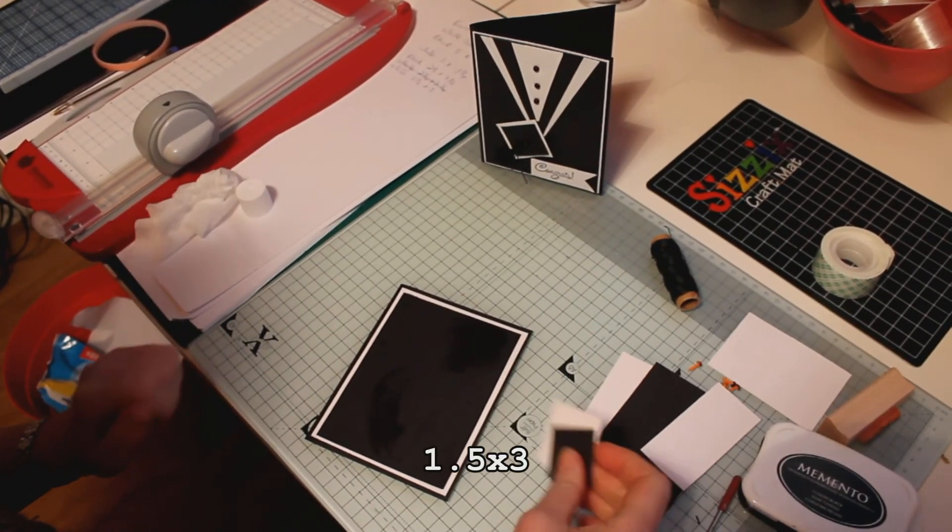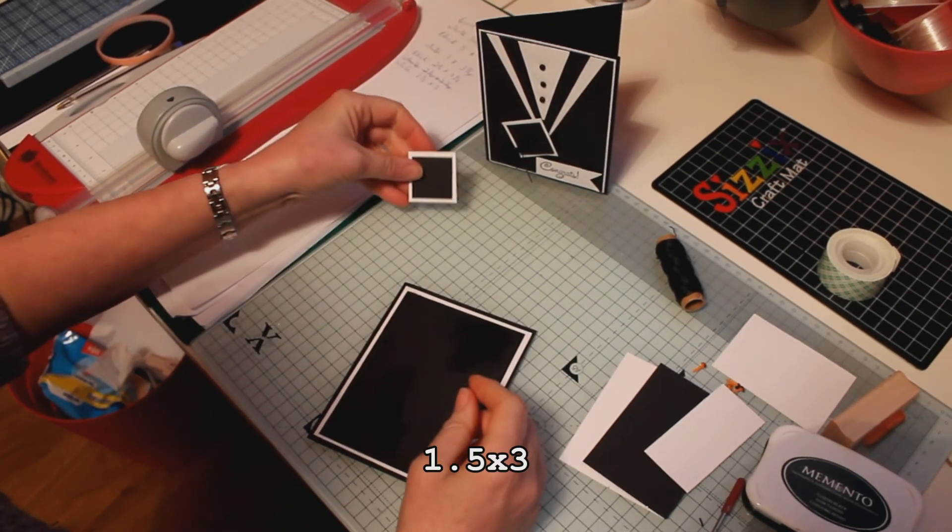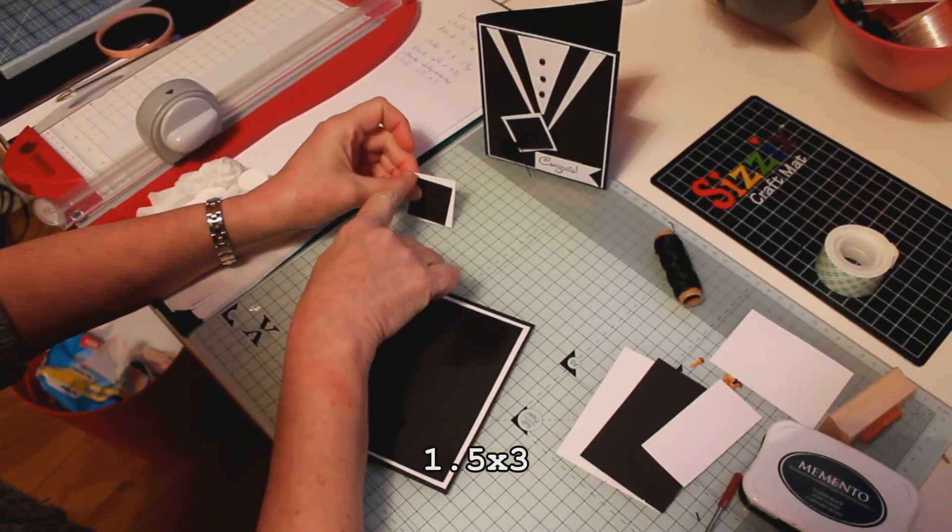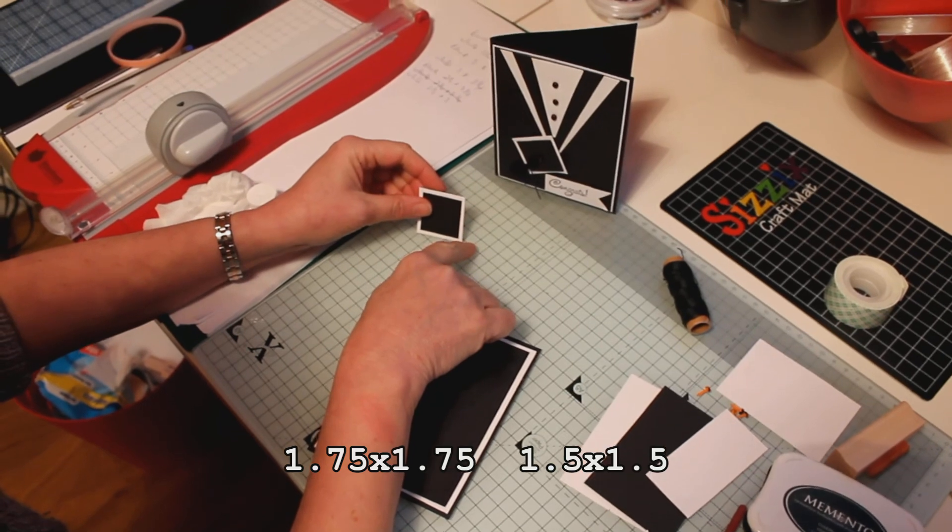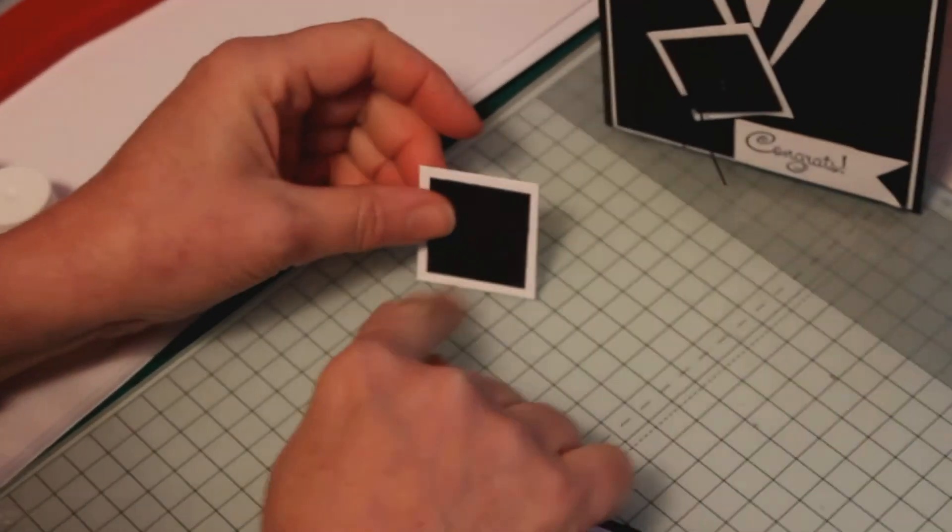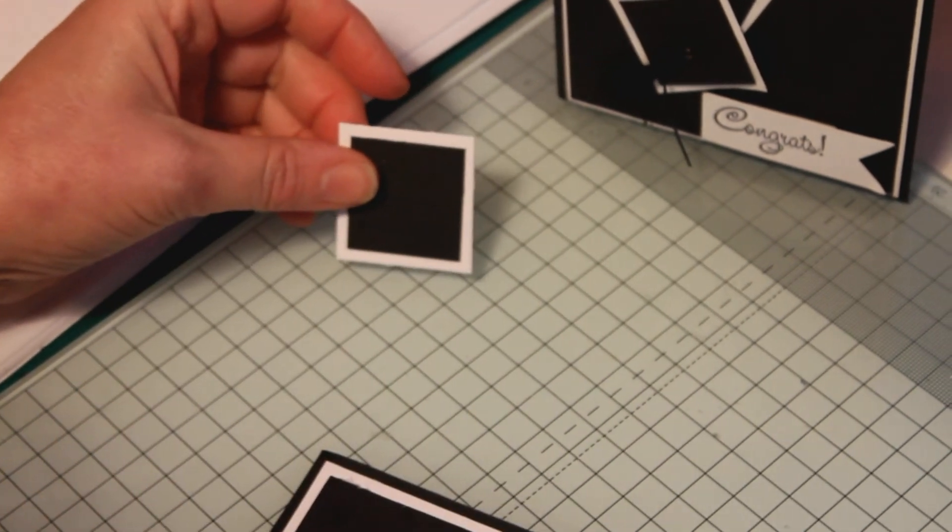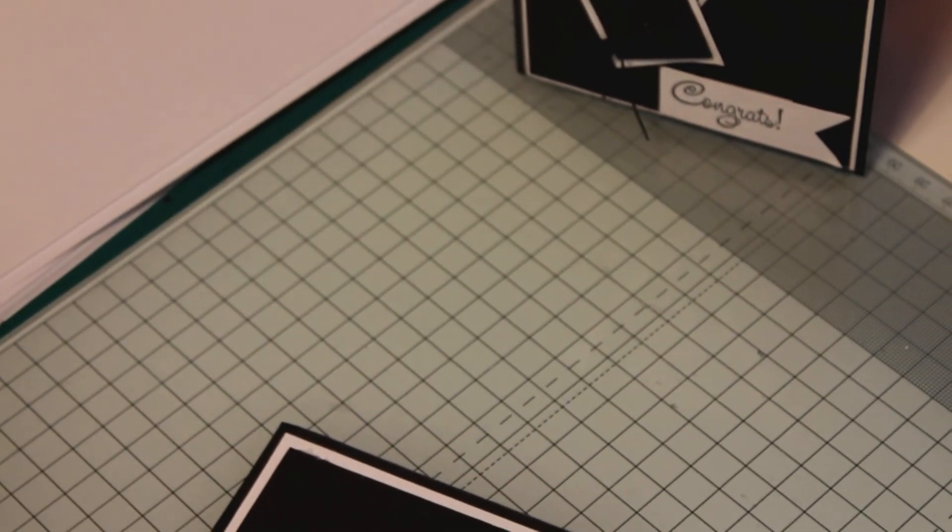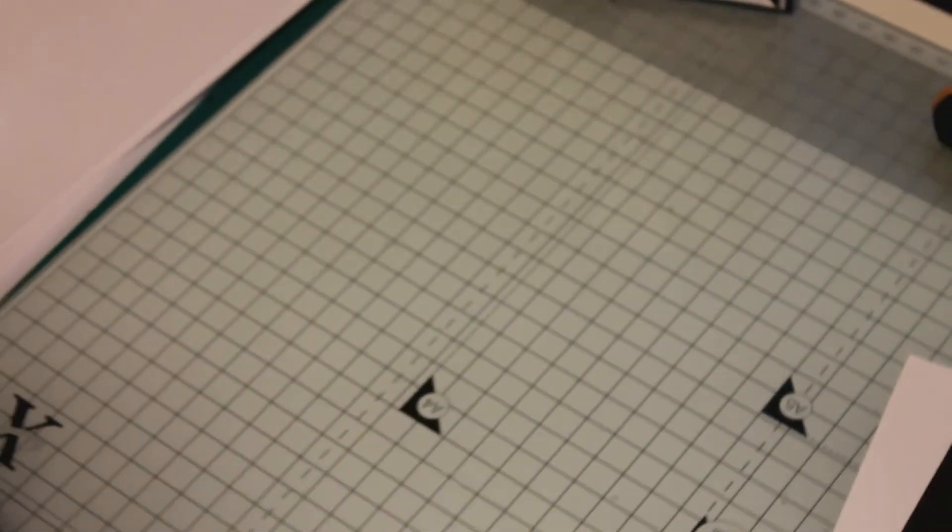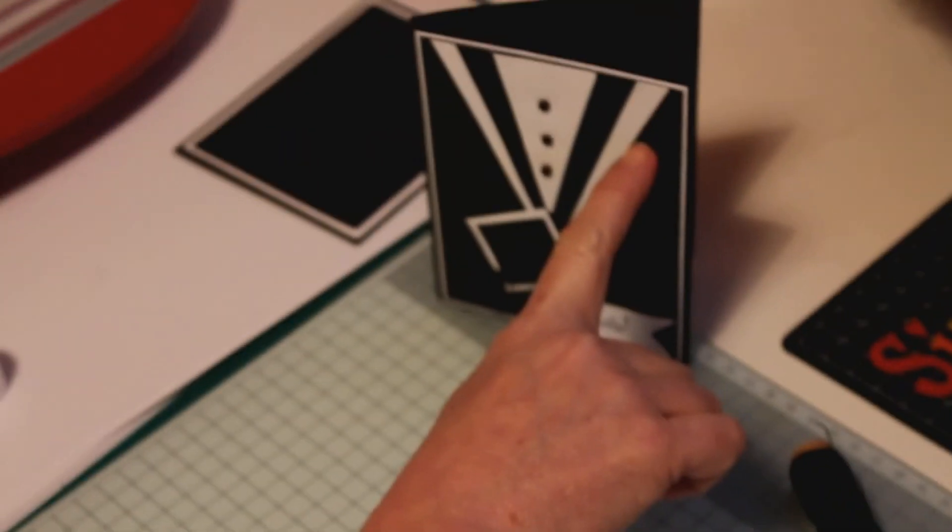And then the final white layer is one and a half by three. And then for the little cap I've cut one and three quarters by one and three quarters, and then the smaller black piece I've cut at one and a half by one and a half.